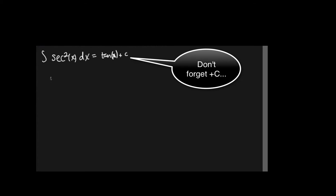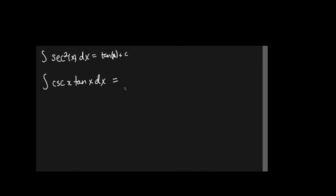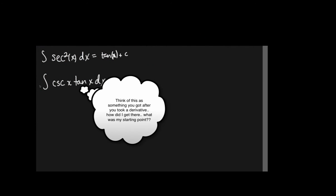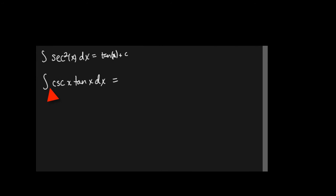Just know your derivatives — think of it backwards. Negative. What is this one going to be? That's cosecant. Close. There should be a negative sign here for it to be cosecant, so because that negative sign wasn't there, it's negative cosecant.